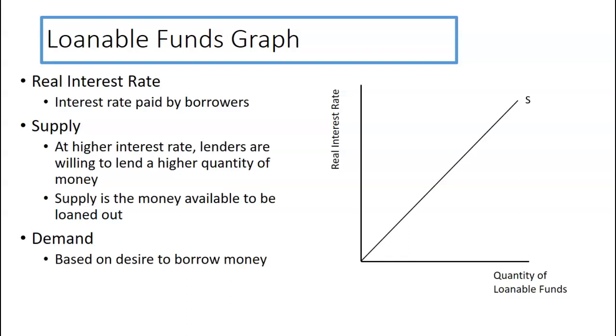And then the demand curve is based on the desire to borrow money, so it's downward sloping. Think of the investment demand curve here. At a higher interest rate, not as many people are going to be able to overcome that high interest rate with return on investment. At lower interest rates, people are more likely to be able to pay off that interest rate with whatever the return on investment is. So you can see supply equals demand and now we can get the real interest rates and the quantity loanable funds right there.